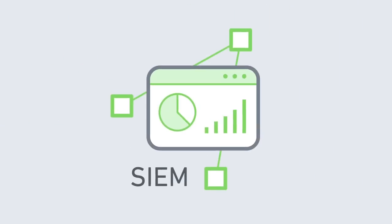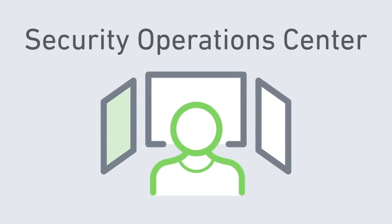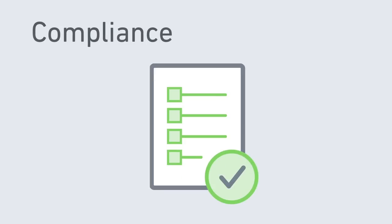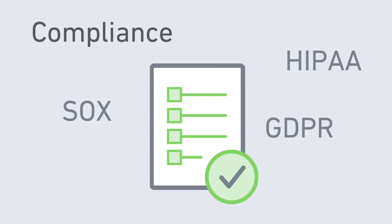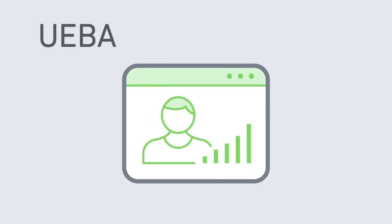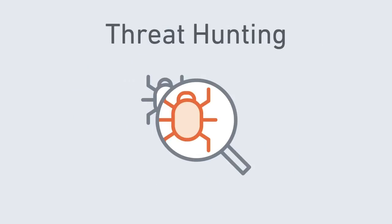Now you know what a modern SIEM is and what it can do. SIEMs can be used for a number of purposes — that's why they're often the foundational platform for the security operations center, the SOC. You can still use your SIEM to demonstrate compliance with regulations like SOX, HIPAA, and GDPR. But a more advanced use would be zero-day detection, where unusual behavior would help detect something you've never seen before.